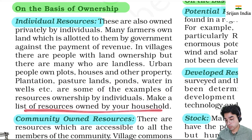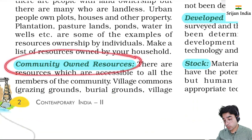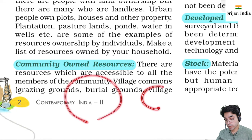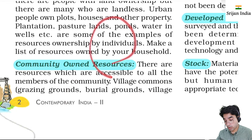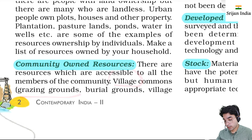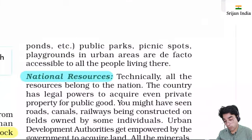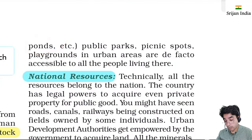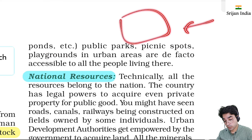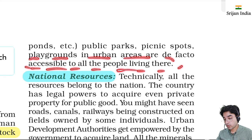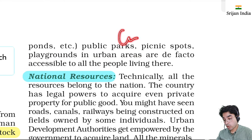Community owned resources are owned by a whole group of people - a community - like the village's common grazing ground, burial grounds, village ponds, public parks, picnic spots, playgrounds, parks in urban areas, and resources within housing societies that are accessible to all people living there. These are community-owned resources.